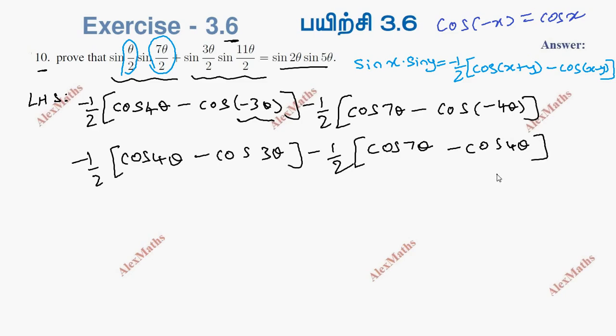Now, minus half equals cos 4 theta minus cos 3 theta plus cos 7 theta minus cos 4 theta. Combining these terms, we get minus cos 7 theta minus cos 3 theta.